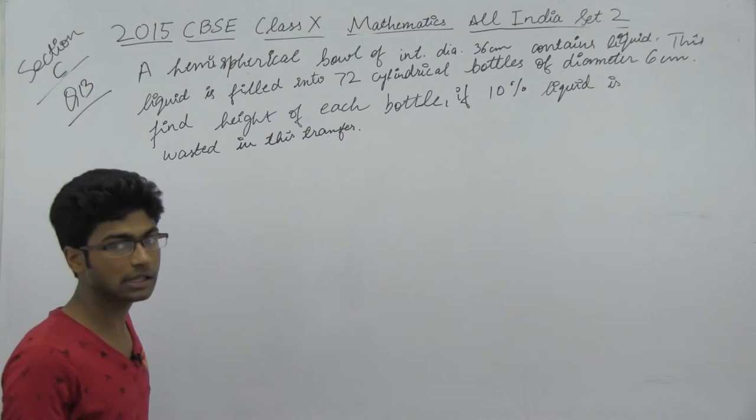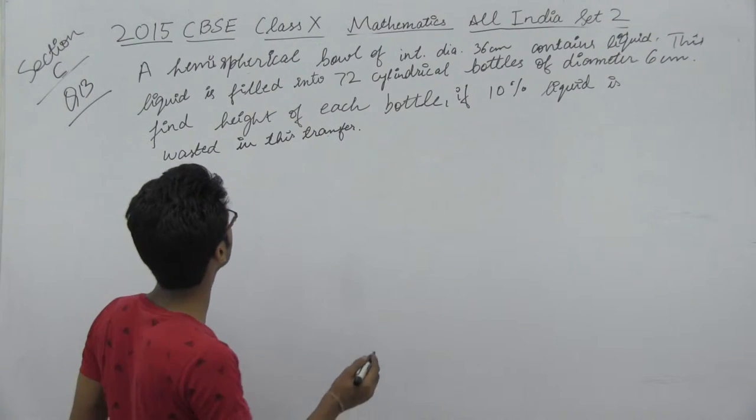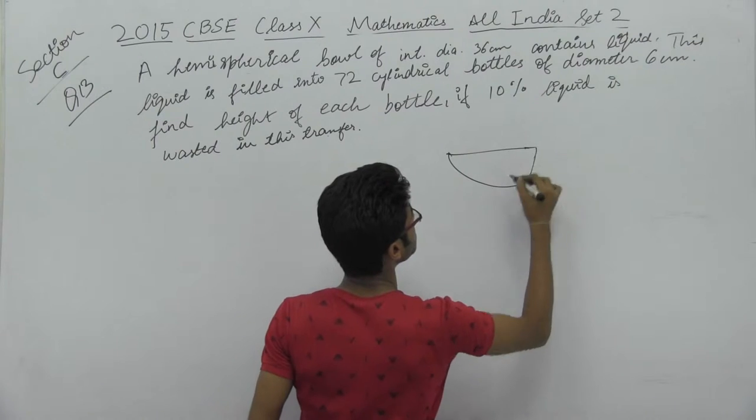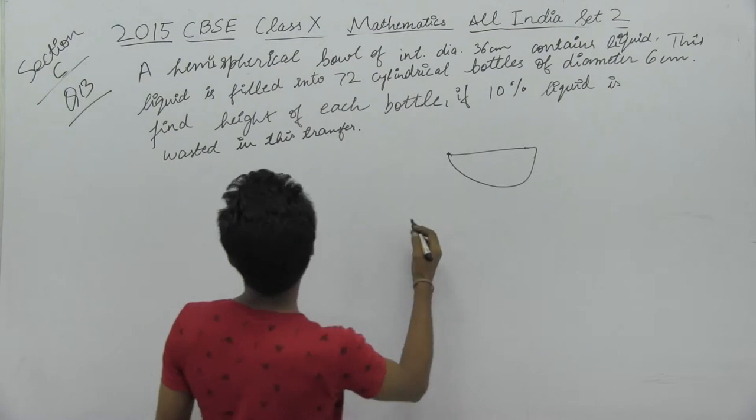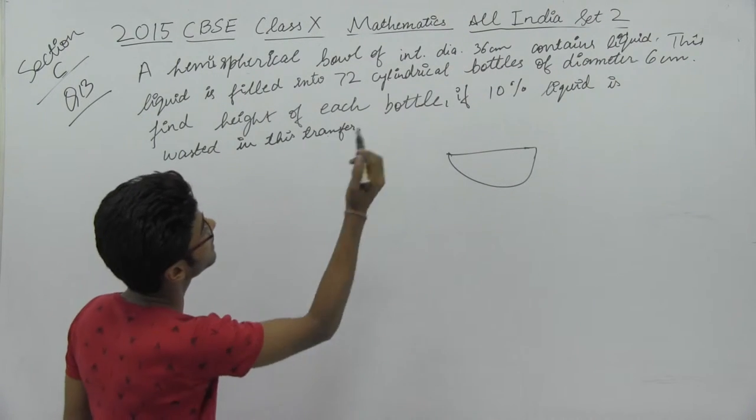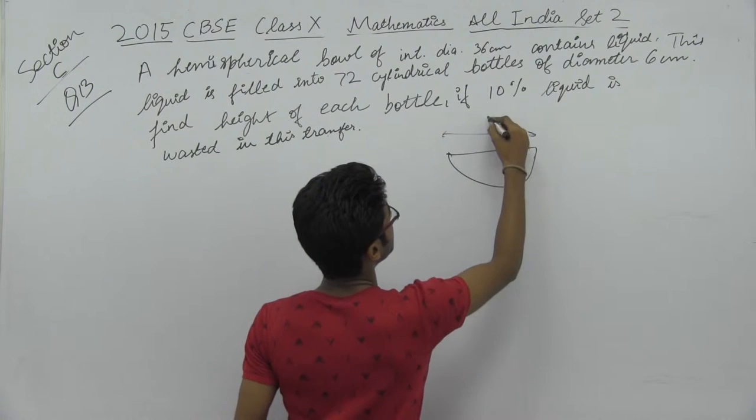First, let's determine the original volume. What is the original volume? We have liquid stored in a hemispherical bowl with a diameter of 36 cm.